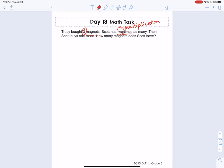Then Scott buys one more. Even though the number one is written out as a word, it still is very important for me to note that he has one more. So that is making me think plus one because the word more should make me think addition. How many magnets does Scott have?